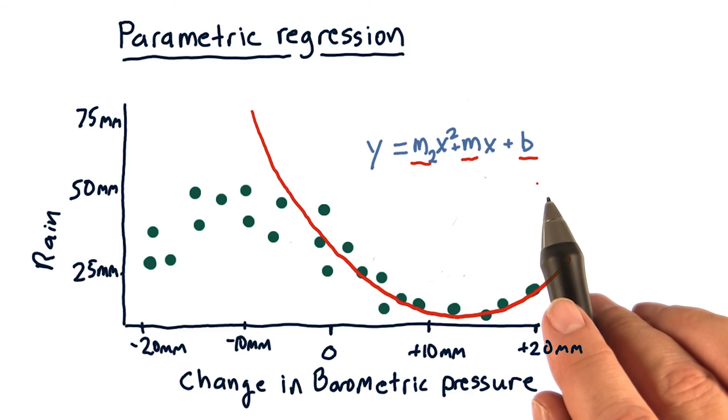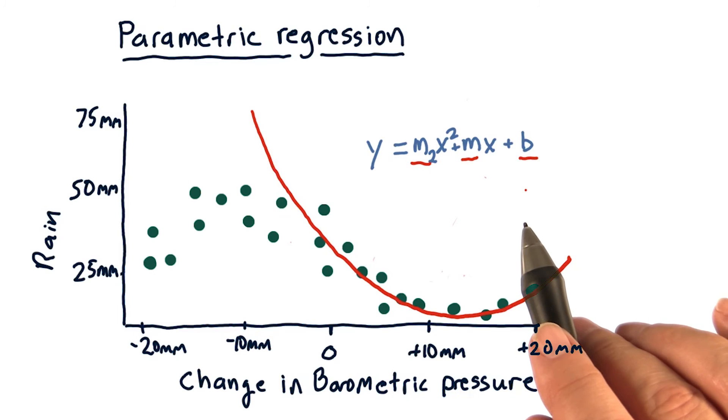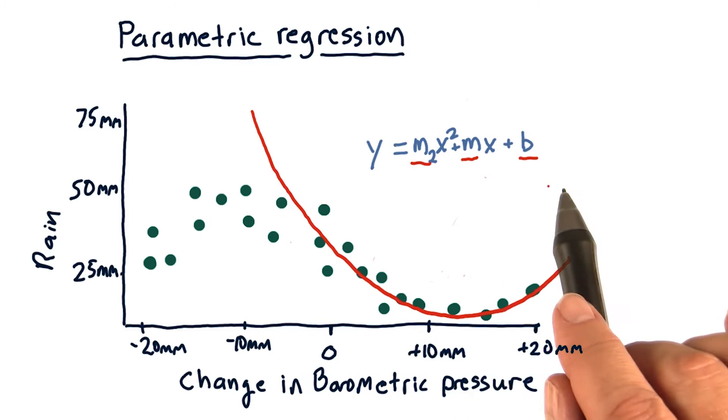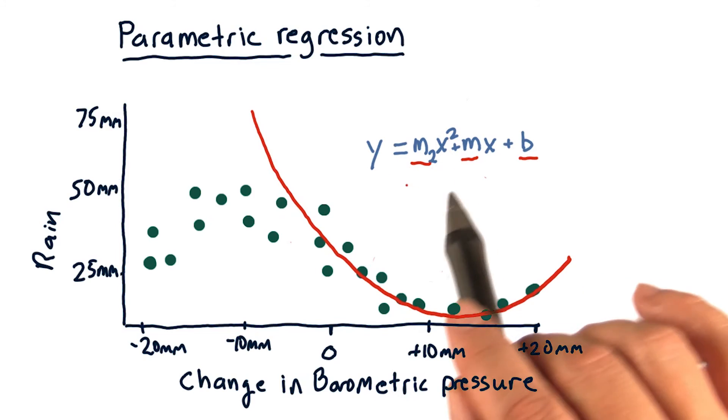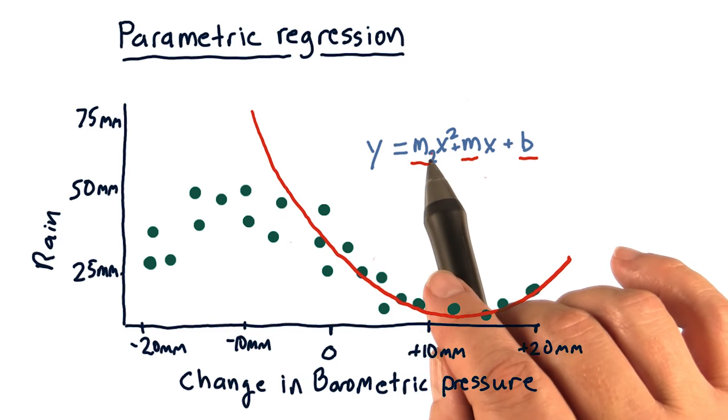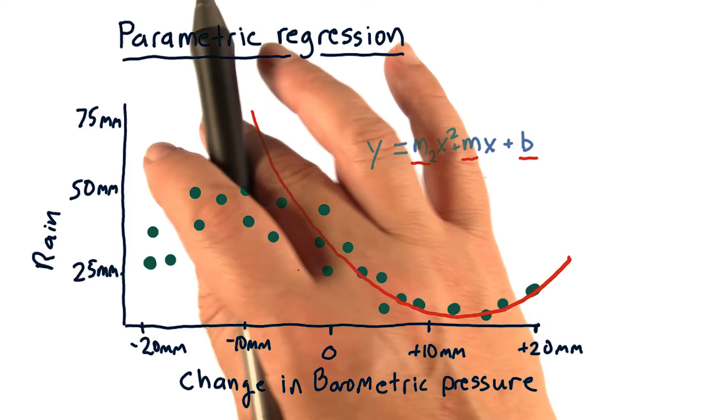Still, three parameters is a pretty simple model. All of these models, whether it's linear with just mx plus b or polynomial with a cubed or a squared term, are parametric models.